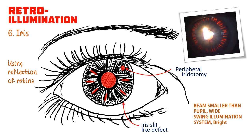The iris will be the next structure we examine. The surface can be looked at with the parallelepiped technique, but retroillumination tends to be the most useful here because you're using the red reflex to identify any defects in the iris — for example, slit-like defects from pigment dispersion syndrome or peripheral iridotomy used to help control intraocular pressure. Retroillumination is really simple and you can incorporate it into your routine exam — you'll be surprised by the amount of information it gives you.